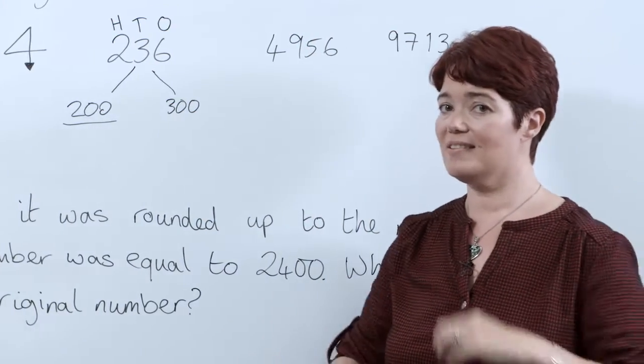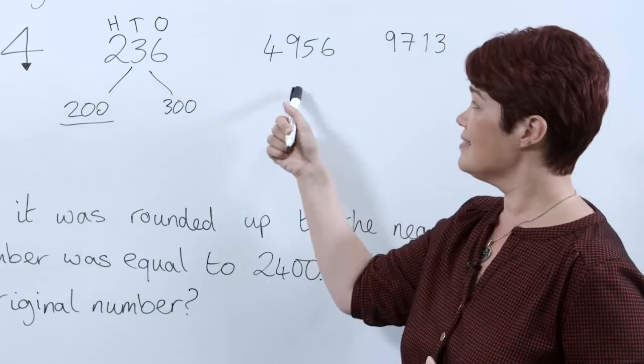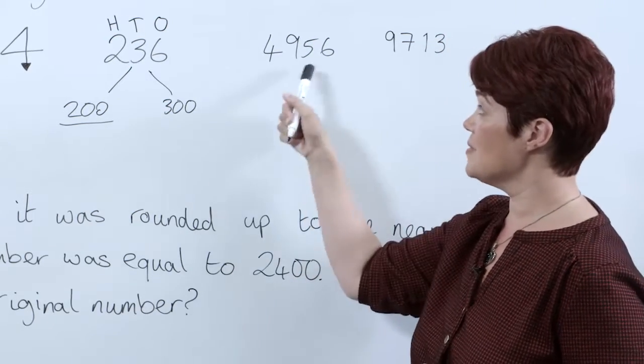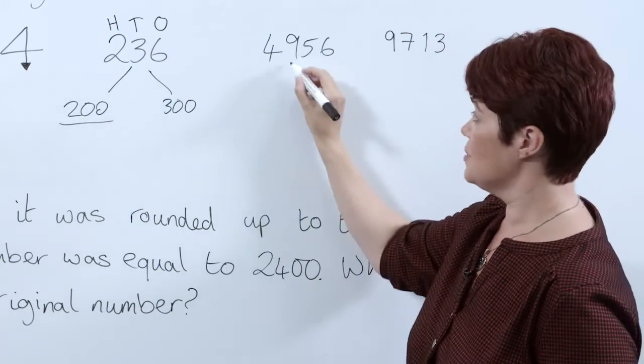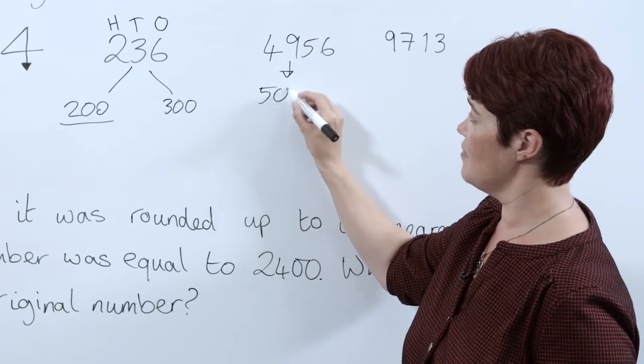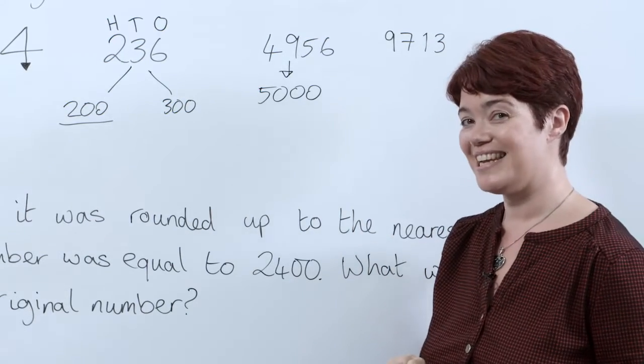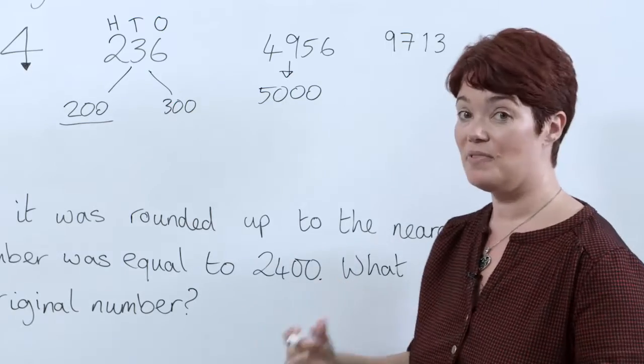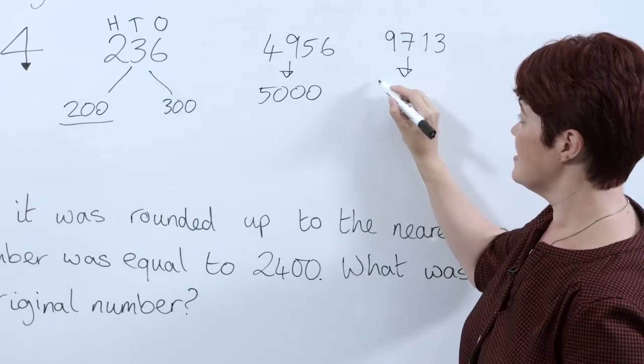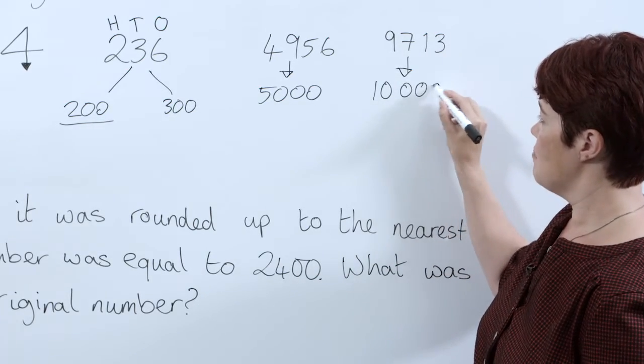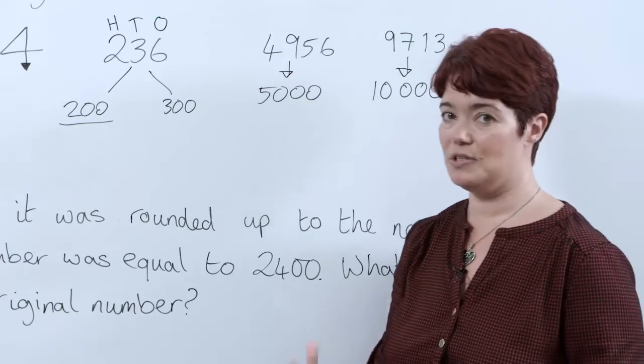Pupils should then get a lot more chance to explore this, especially numbers like 4,956, which when we round, rounds to 5,000, and numbers like 9,713, because again, as that rounds, it rounds to the nearest thousands as well. Very important that pupils get the opportunity to do that.